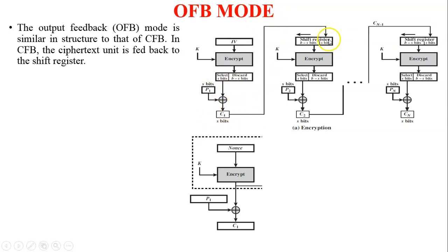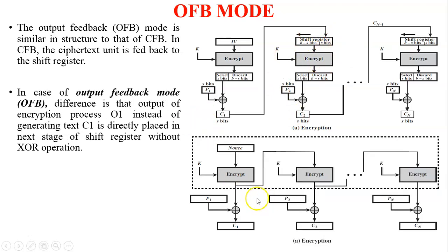But in Output Feedback mode, C1 — the ciphertext — is not fed back to the next process of encryption. Instead, O1, which is the output of the encryption algorithm, is given to the second block of plaintext to encrypt and generate the ciphertext. So the difference in OFB mode is that the output of the encryption process O1 is used, not C1.